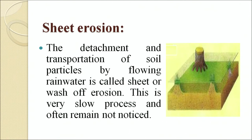Sheet erosion is the detachment and transportation of soil particles by flowing rainwater. It is also called sheet or wash-off erosion. This is a very slow process and often remains unnoticed.